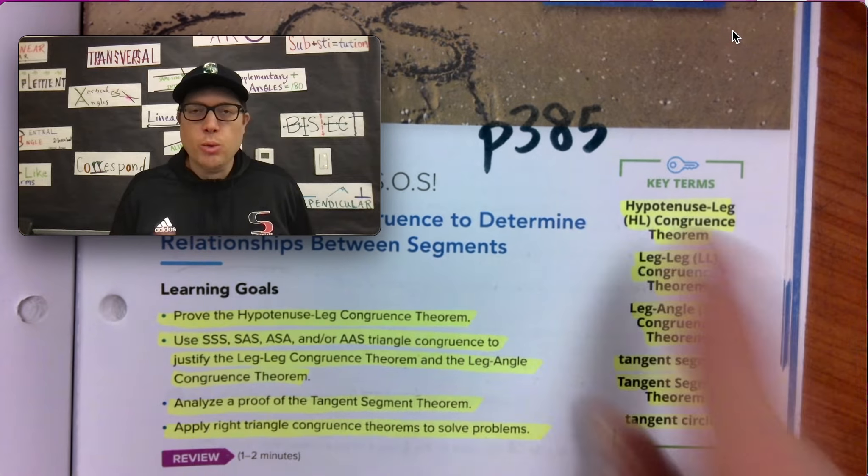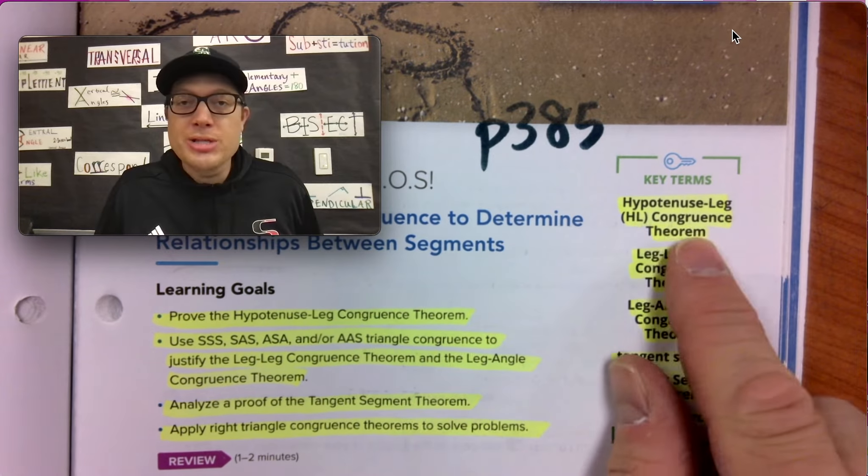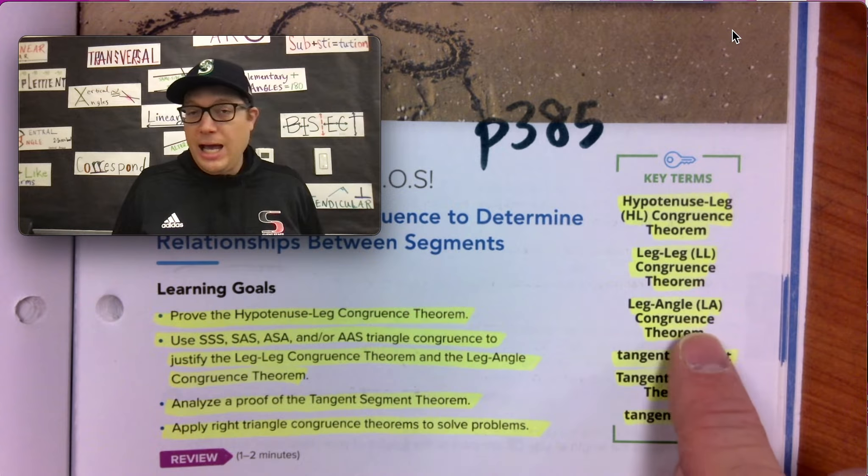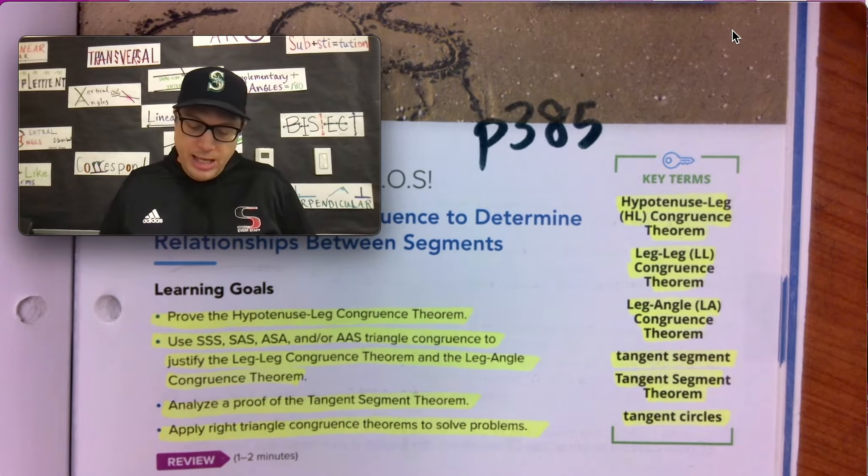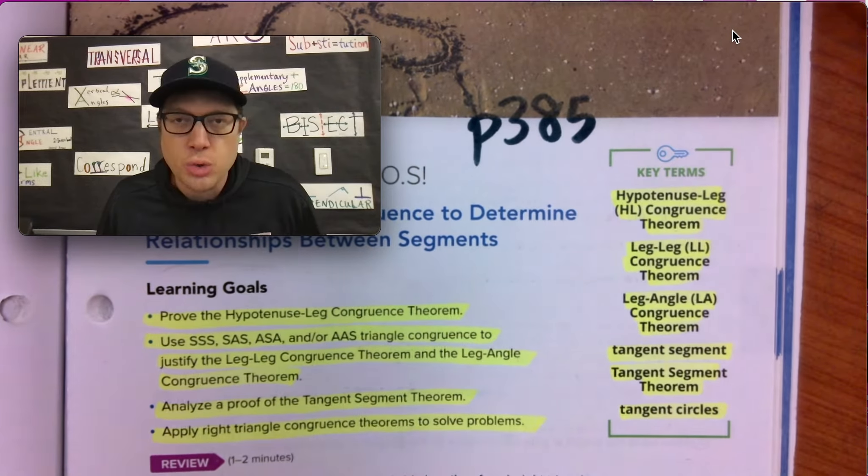Highlights. The key terms that we're going to be talking about in this lesson's videos: Hypotenuse leg congruence theorem, the leg-leg congruence theorem, the leg-angle congruence theorem, tangent segment tangent segment theorem, and tangent circles.